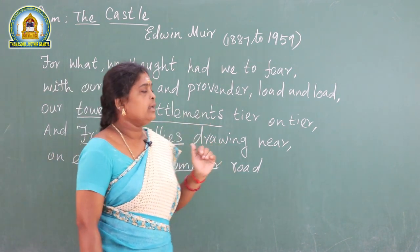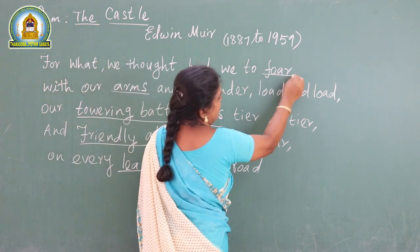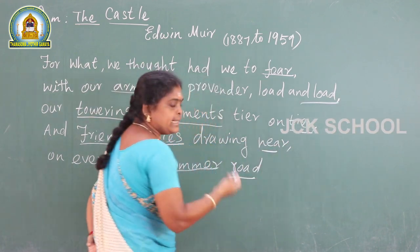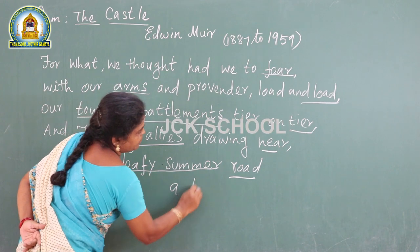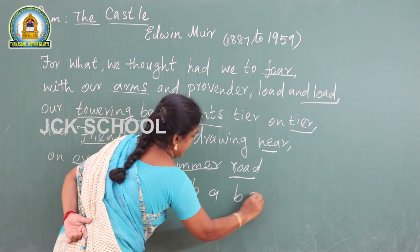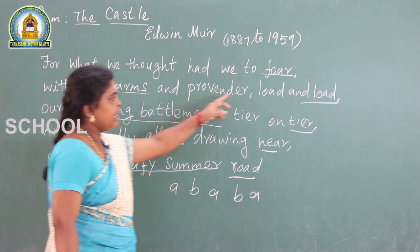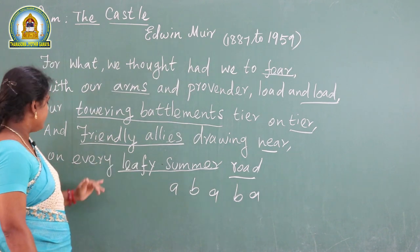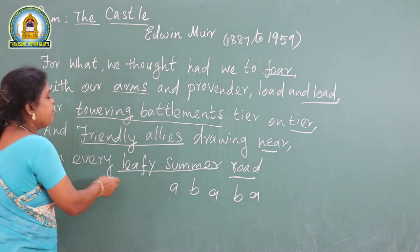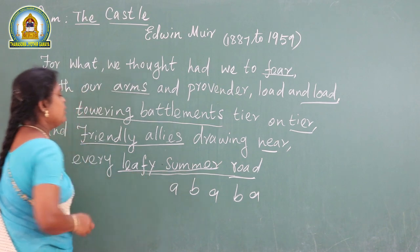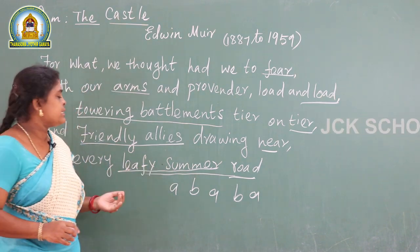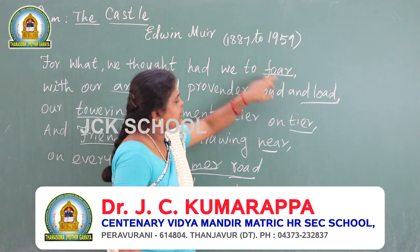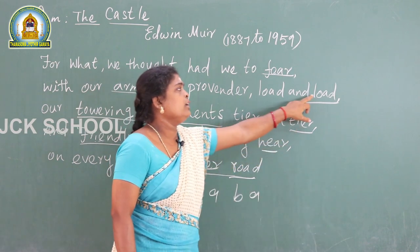The poetic devices in the second stanza: the rhyming scheme uses the words 'fear,' 'tier,' 'near' as A rhymes, and 'load,' 'road' as B rhymes. So the rhyming scheme is once again A-B-A-A-B. The phrase 'on every leafy summer road' contains personification — the leafy summer road is compared to a shut-down image. The rhyming words are: fear, tier, near — and load, road.